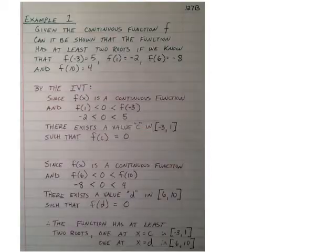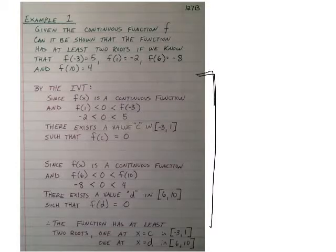This example was adapted from an AP question, so this is kind of in the format of an AP question, and the response was constructed in a way that probably would receive full credit on a free response. Given the continuous function f, can it be shown that the function has at least two roots?